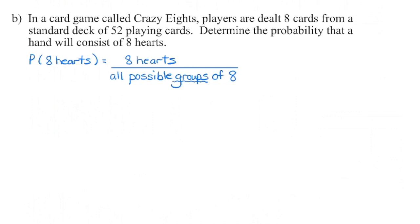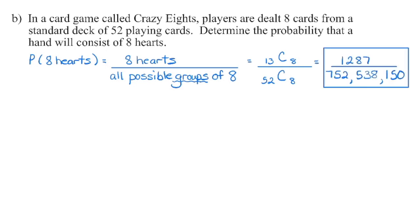Setting up the denominator for all possible groups of 8: from a standard deck of 52 cards, we are choosing 8, so it's 52 choose 8. In the numerator, I need 8 hearts. There are 13 hearts in a deck, and we are choosing 8 of them: 13 choose 8. You can enter both into your calculator. If the question doesn't specify the format, you can leave it as a fraction or convert to a decimal or percentage.